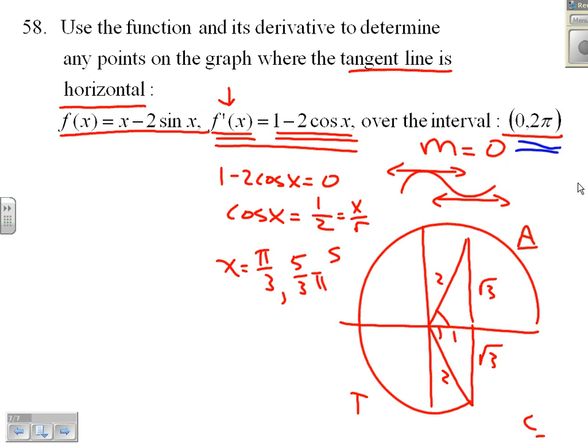So we have two places where the slope is zero. One of those being at pi on 3 for x and another being at 5 thirds pi for our x value. We just need to find our y value.